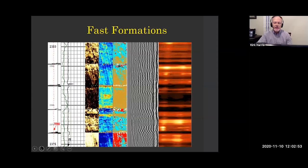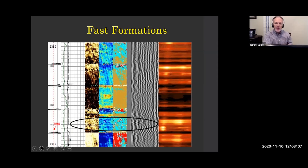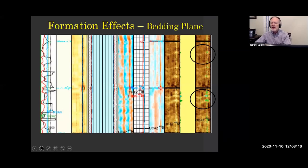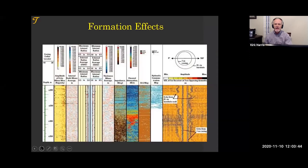We can also see or experience fast formations, because of the interference. As we reflect off fast formations, you see here is the fast formation and you see the change we get in the bond log, the radio log, and the ultrasonic log. We see other formation effects — bedding planes. This is a famous paper showing bedding planes being seen through the cement. It's probably a really good cement job, but we can see things with the ultrasonic although theoretically we shouldn't be able to.